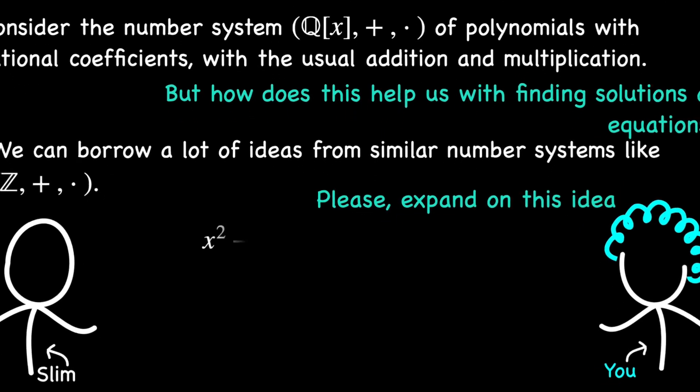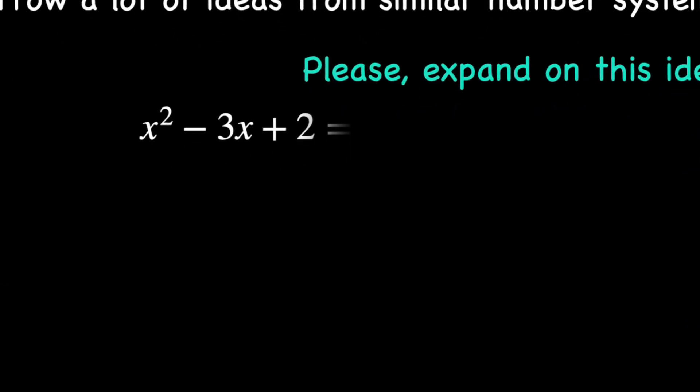Let's revisit our earlier example: x squared minus 3x plus 2. When we think of this as a function, we are looking for values of x that make the function equal to 0. These values, 1 and 2, are the solutions or roots of the equation. But let's think of x squared minus 3x plus 2 as an element of our polynomial number system. We can ask: can we factor this polynomial? And indeed we can — x squared minus 3x plus 2 equals x minus 1 times x minus 2. Notice something important: the factors x minus 1 and x minus 2 directly correspond to the solutions 1 and 2. This is no coincidence. If a polynomial can be factored into linear terms of the form x minus a, then the values a are the solutions to the equation.